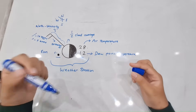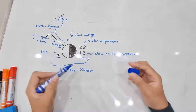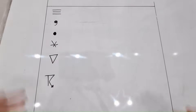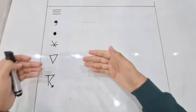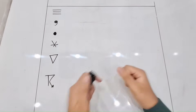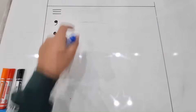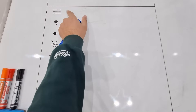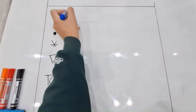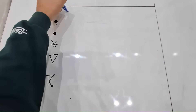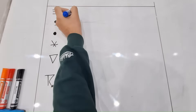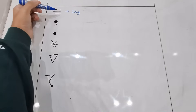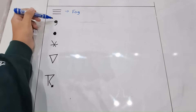Now let's go a bit deeper and look at the different symbols on a synoptic weather map. Here we have six different types of symbols. The first one shows three parallel lines, which indicates that there is fog in that area.